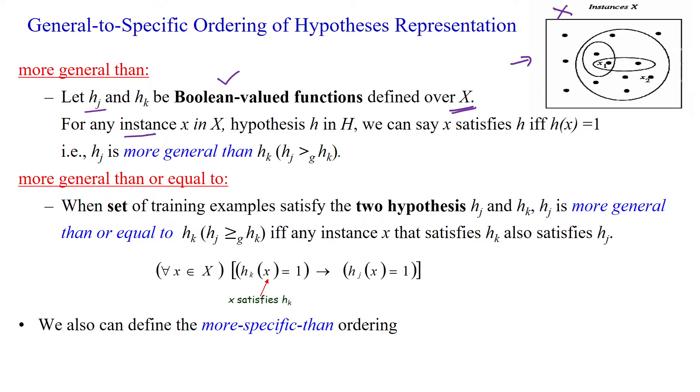For any instance x in capital X and any hypothesis h over the hypothesis space capital H, we can say an example satisfies the hypothesis space h if and only if h of x equals 1.